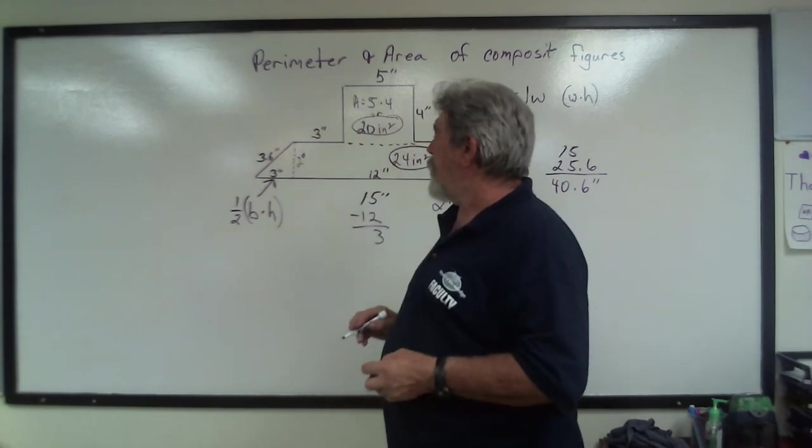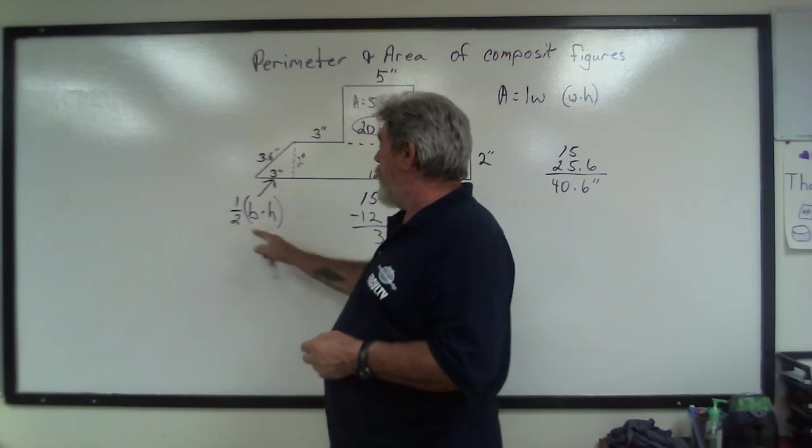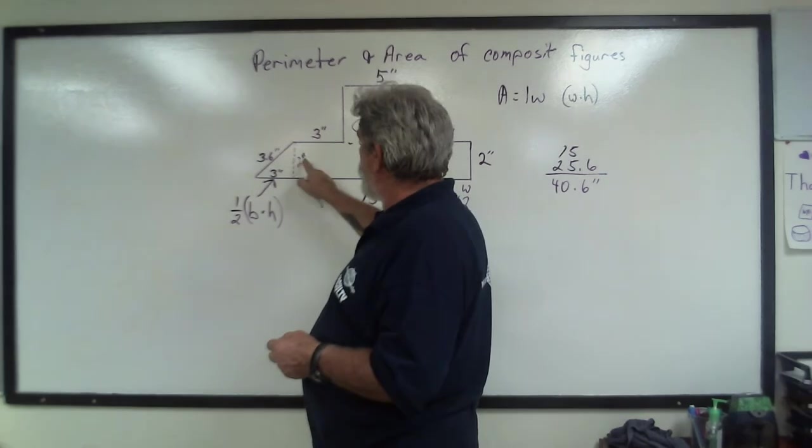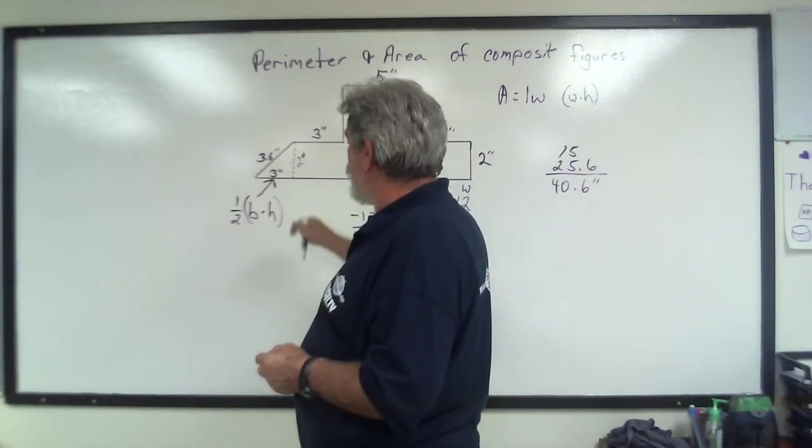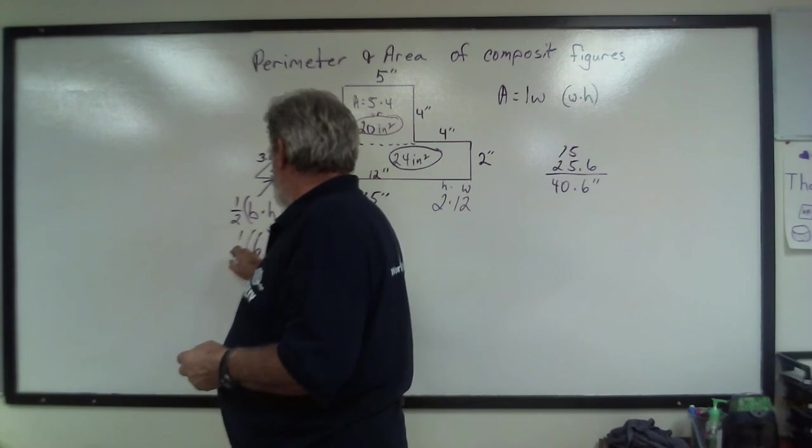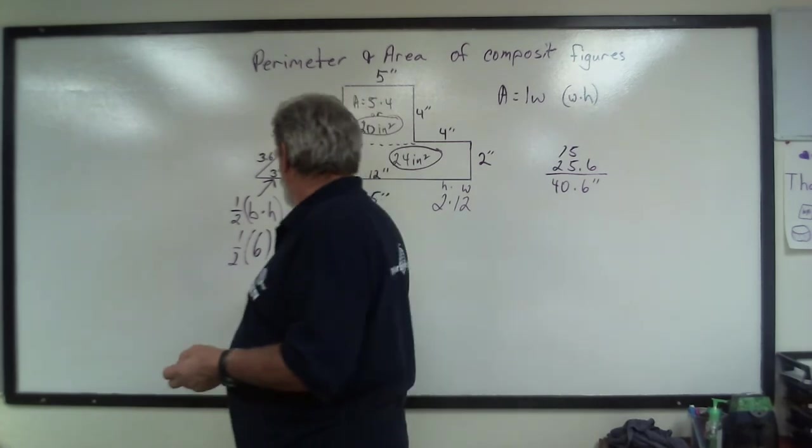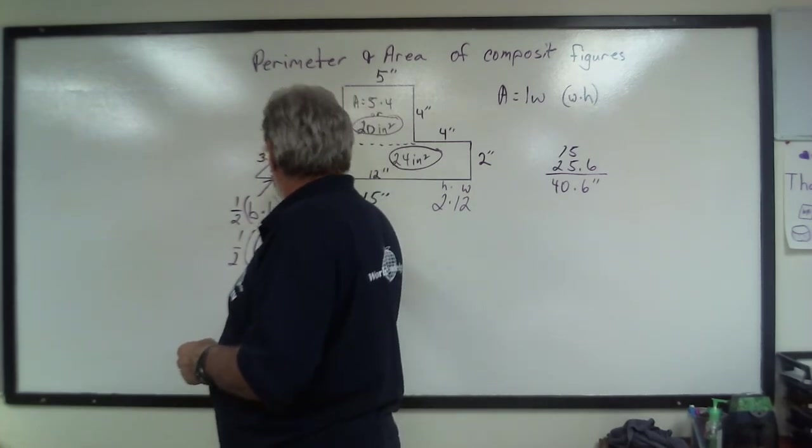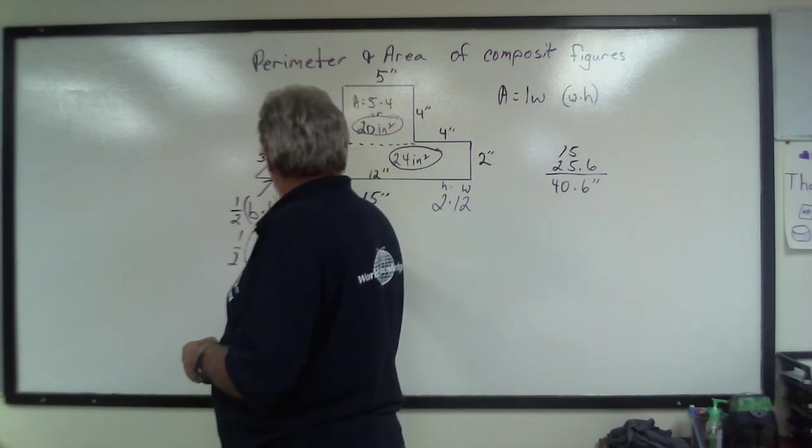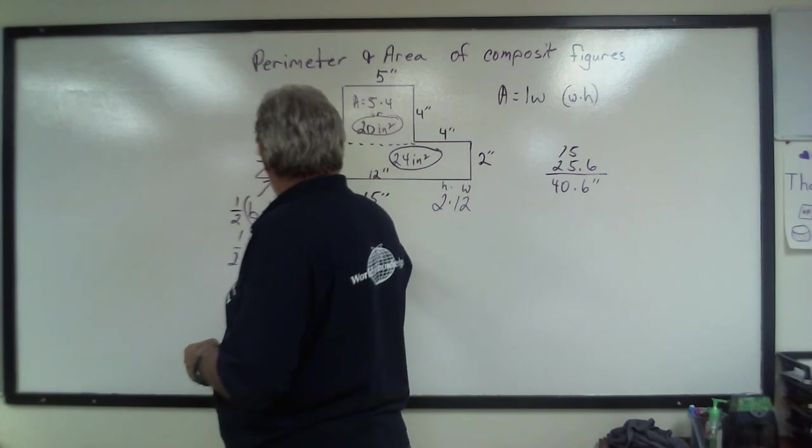Let's do the area on our triangle piece over here. The area on the triangle piece is 1 half the base times the height. So we take the base times the height, which is going to give us 6. So our area here is 3 inches squared.